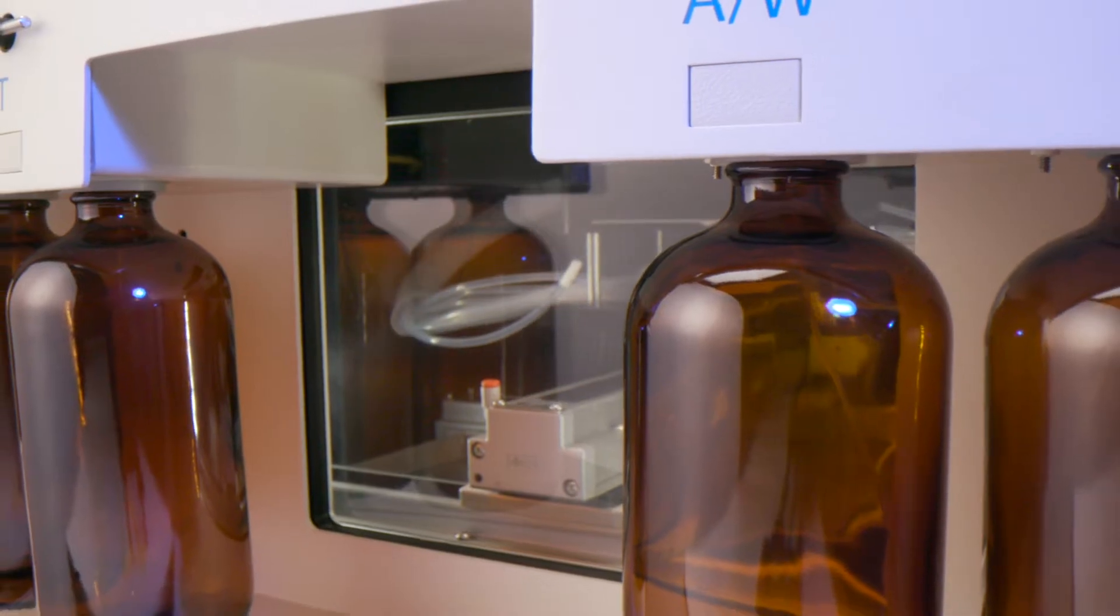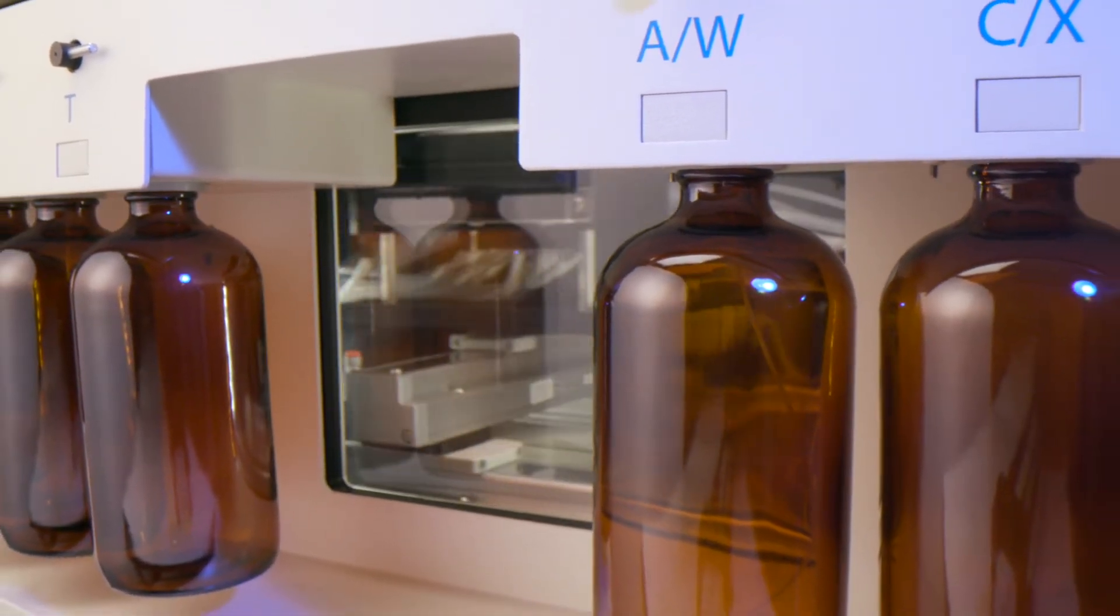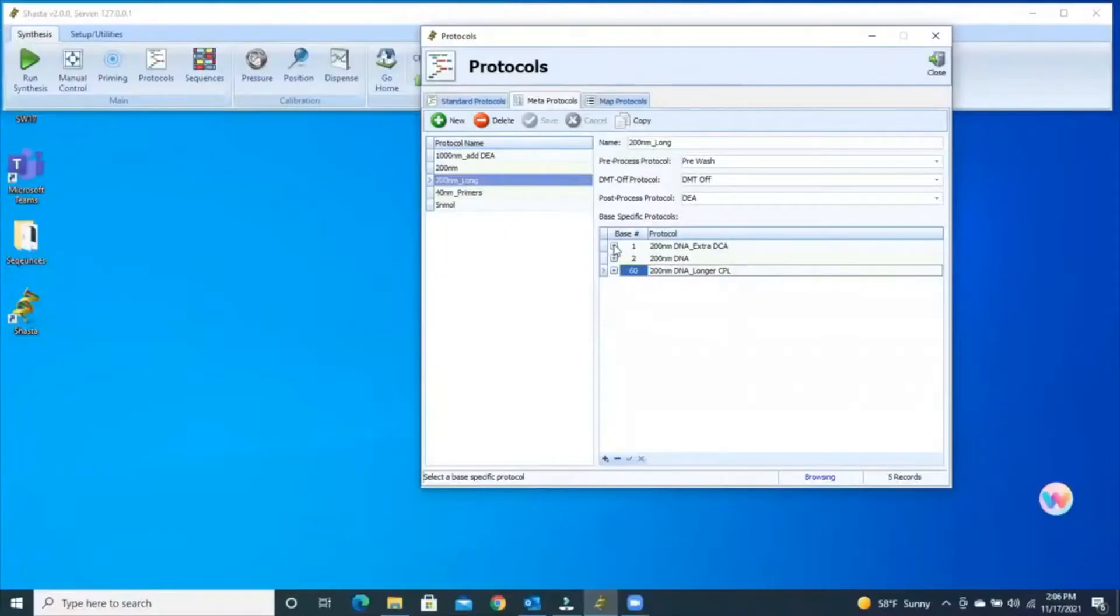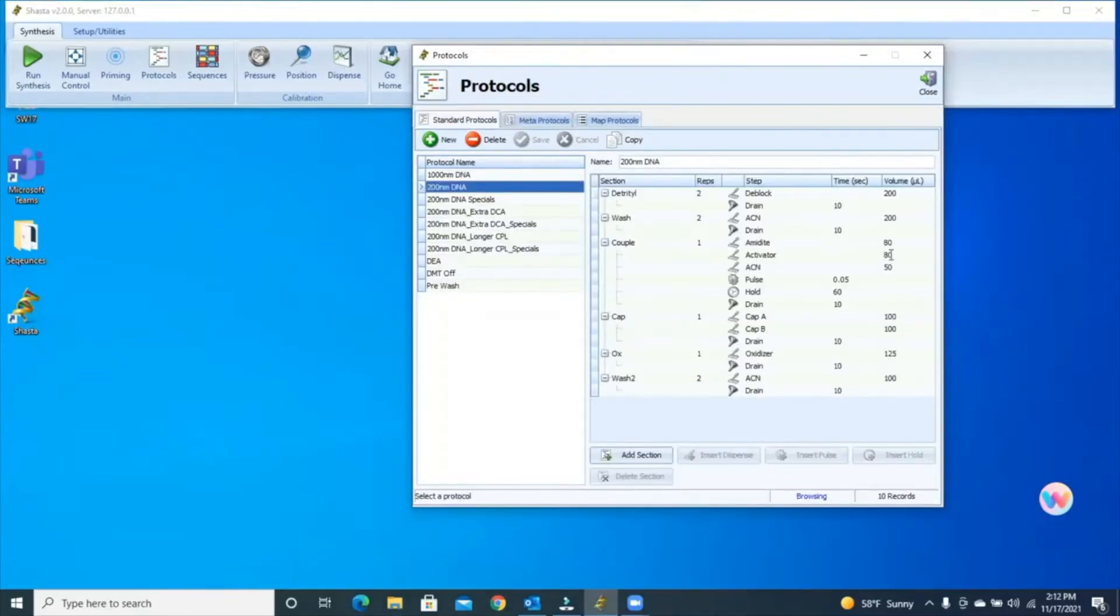Our Shasta will run like a typical high-throughput synthesizer, meaning it will give you access to protocol modifications, mass protocol changes throughout the run, defining your amidite handling, defining pre- and post-synthesis handling procedures, and selecting for the support you're using.